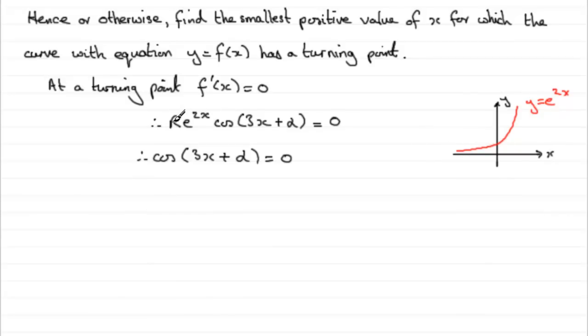The x-axis is what we call an asymptote. And r can't equal 0 because that's a positive number. So it leaves us with cos 3x plus alpha that equals 0. And this is very easy to solve because all we've got to do is inverse cos both sides. So we've got 3x plus alpha equals the inverse cos of 0.